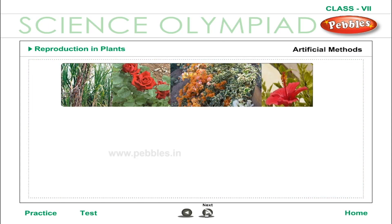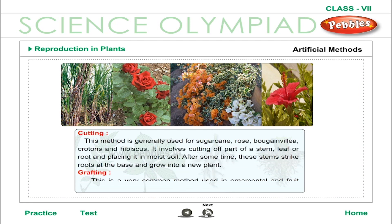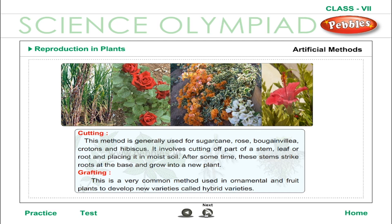Artificial Methods — Cutting: This method is generally used for sugarcane, rose, bougainvillea, crotons and hibiscus. It involves cutting off part of a stem, leaf or root and placing it in moist soil. After some time, these stems strike roots at the base and grow into a new plant.